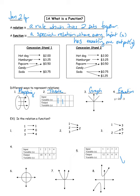For example, I have two concession stands represented. At concession stand number one, if you say you'd like a hot dog, the answer is two dollars. Popcorn is 50 cents, soda is 75 cents, candy is 50 cents. Every time I give you an input, you respond with a single output — that is exactly what a function is. At concession stand number two, if you say you'd like a soda and the worker says 'which size,' that one input results in two separate outputs. This is not a function.